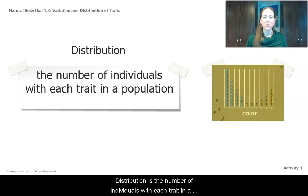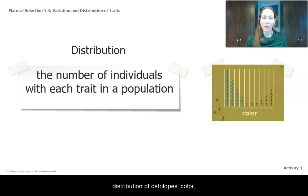Distribution is the number of individuals with each trait in a population. So when we look at the distribution of ostrilopes color, we can see most of them are blue, many of them are yellow, and very few of them are green.